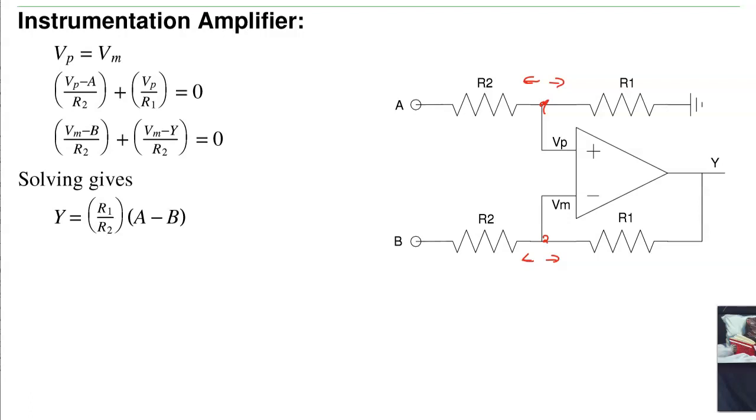I can also use superposition. Let A be 0 volts. In that case, this is 0. This is 0. This is 0. That's an inverting amplifier. So I know that Y is equal to minus R1 over R2 times B.